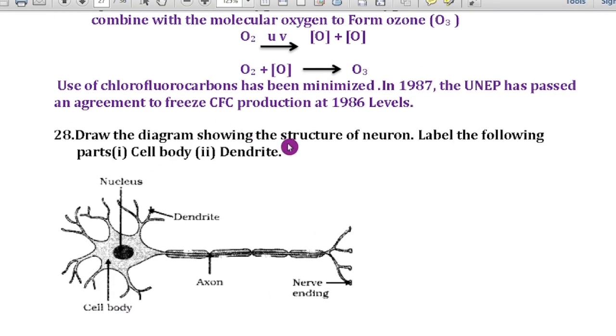Question number 28: Draw the diagram showing the structure of neuron and label the following parts: cell body and dendrites. Here we have to learn four parts because they may ask next time axon and dendrites. This is nucleus and this we call as the dendrites. Then this is the cell body and this is axon and this is the nerve ending.